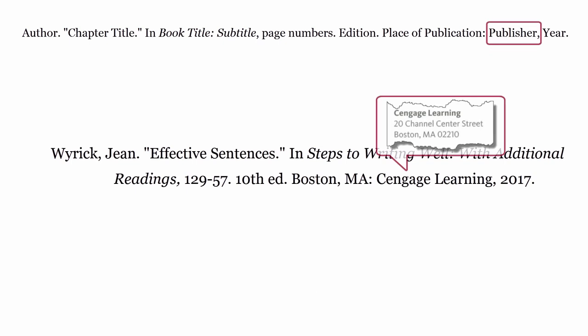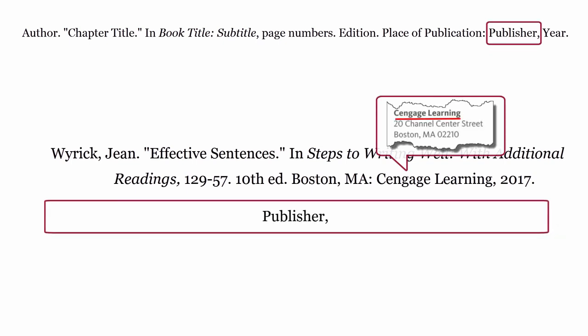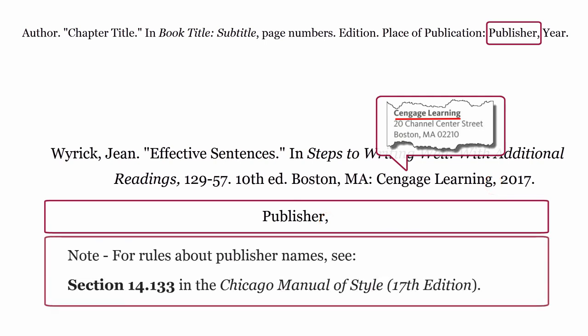Publisher. This is who published the book. The publisher is formatted using the publisher's name, then a comma. For rules about publisher names, see section 14.133 in the Chicago Manual of Style, 17th edition.